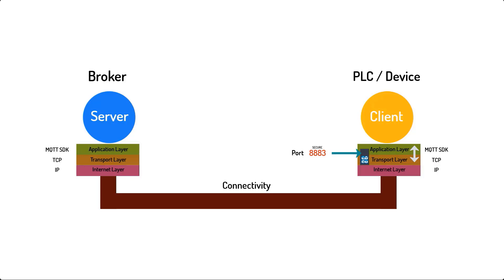The third layer is the internet layer, which is yet another software entity that resides on your device. When your transport layer is finished splitting your MQTT messages into packets and adding the necessary control information, it pushes the packets onto the internet layer. The internet layer then uses the rules specified by the internet protocol to attach your broker IP address and your PLC IP address on each packet so as to make sure they arrive where intended. Finally, your MQTT message packets are placed on a physical medium where they are transmitted as electrical signals.